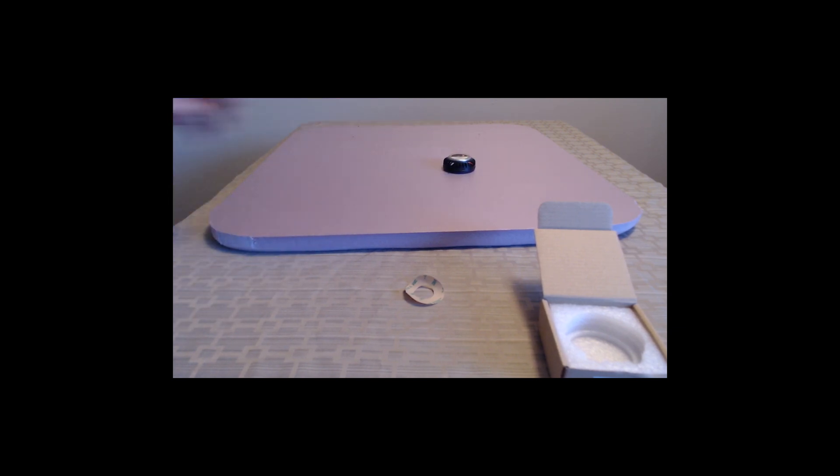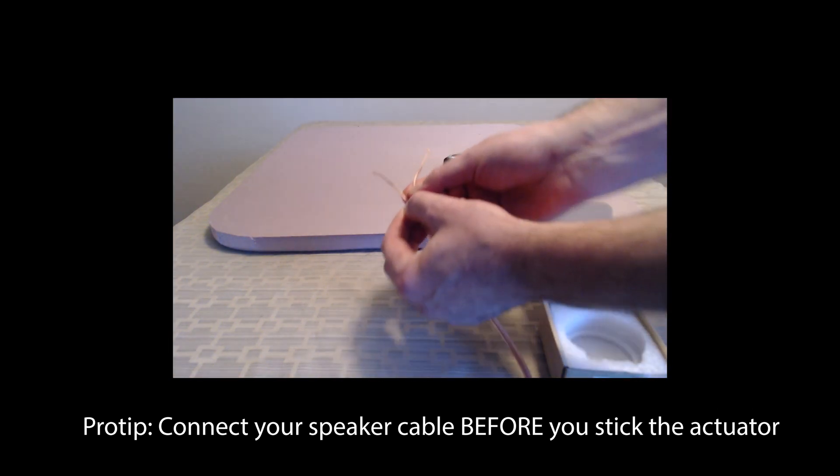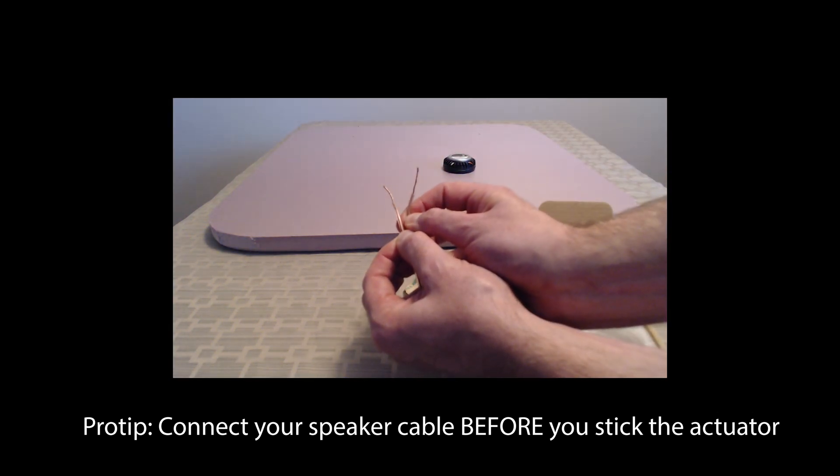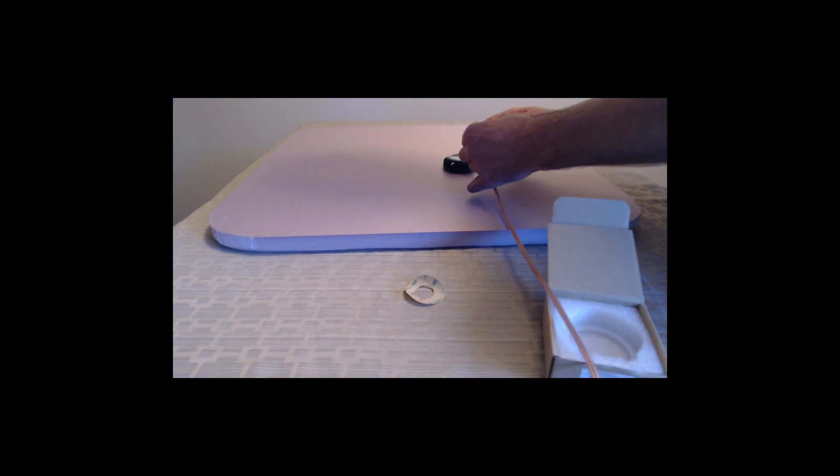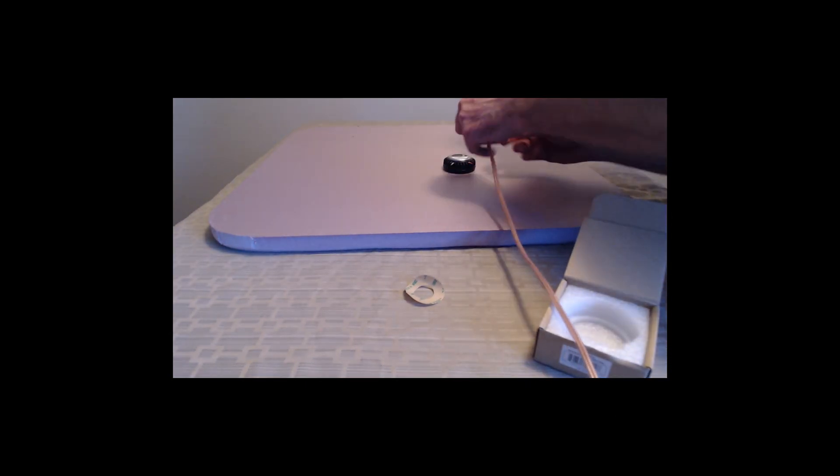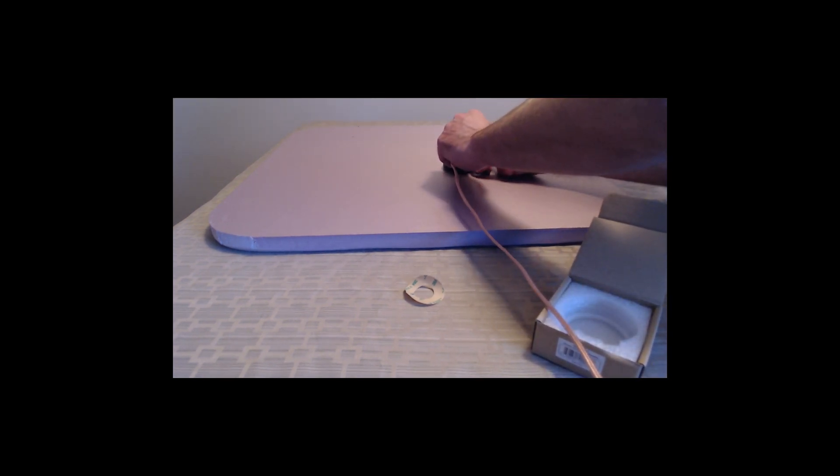Just go ahead and put your speaker cable on there before you stick the actuator down. Because those little tines coming off the actuator are pretty small, it's kind of a pain to wire it up when it's up against the panel there. So you can kind of see me like fiddling around a little bit, trying to get this thing to fit right. If you're really, really fancy, go ahead and put some shrink wrap on there.